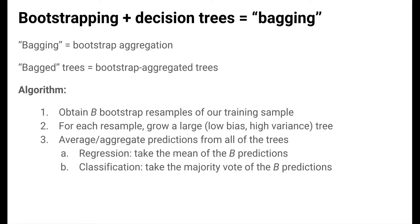The bagging algorithm is this: first, obtain B bootstrap resamples of our training set. For each of these B resamples, grow a very large, low-bias, high-variance tree. Finally, average or aggregate predictions from all of these trees. In a regression task, each of the B trees generates a quantitative prediction, and we average them to get the final prediction. In a classification task, each tree generates a class prediction, and we aggregate by taking the majority vote.